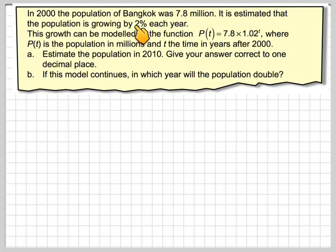In the year 2000, the population of Bangkok was 7.8 million. It is estimated the population is growing by 2% each year. The growth can be modeled by the function P(T) = 7.8 × 1.02^T, where P(T) is the population in millions and T is the time after 2000.